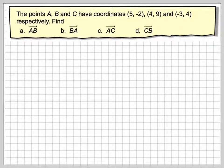In this video, we're going to look to find these vectors here using position vectors. So it says points A, B and C have coordinates 5, -2, 4, 9, and -3, 4 respectively.